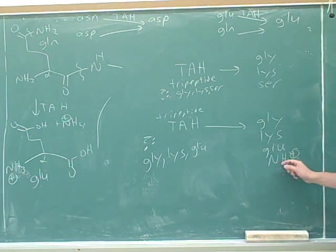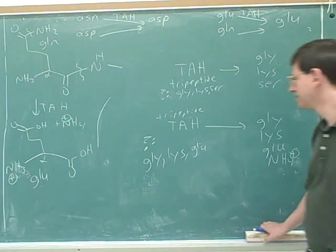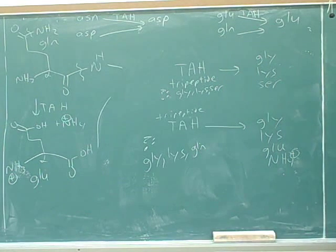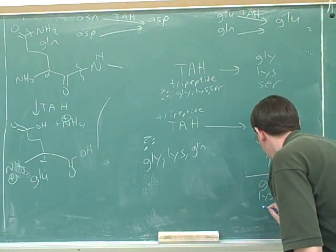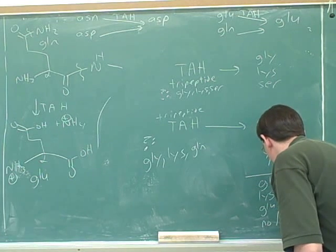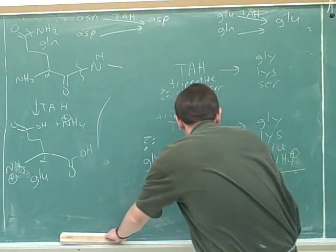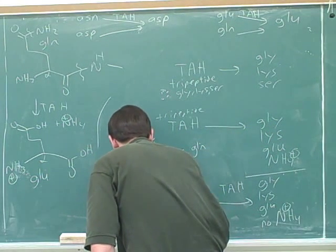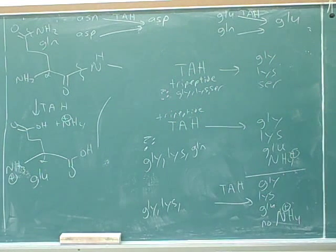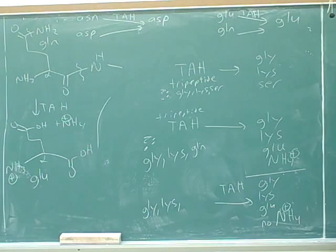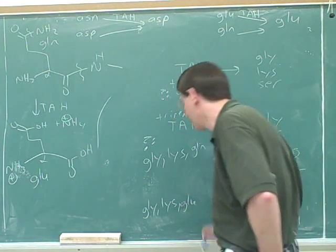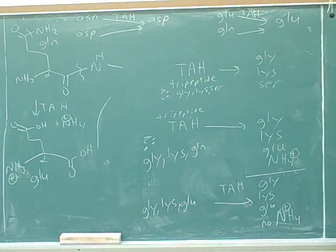If the total acid hydrolysis gives you glutamic acid plus ammonium, then you know the starting material was glutamine. On the other hand, if the total acid hydrolysis gives you glutamic acid and no ammonium, then you know the third amino acid was glutamic acid itself. So the ammonium is a kind of marker.